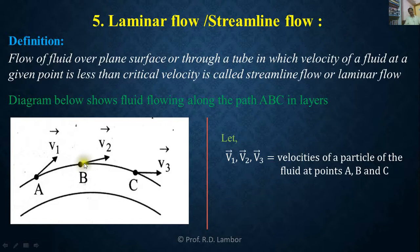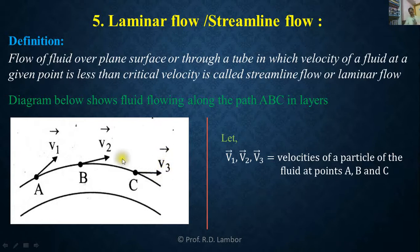The particle which is at point B will then reach point C. Each new particle arriving at point C will have the velocity equal to V3, and that tangent gives the direction of velocity at that point.